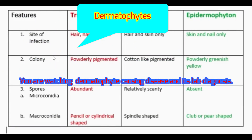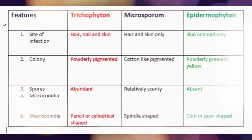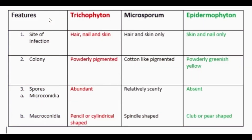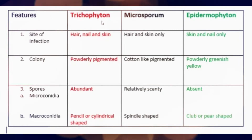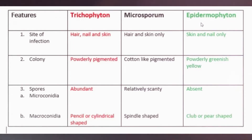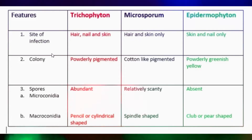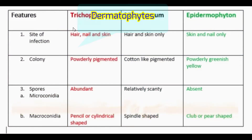Hello everybody. Today we are going to practically identify dermatophytes. As you know, dermatophytes are of common level, consisting of three types of fungus genus: Trichophyton, Microsporum, and Epidermophyton, that commonly cause skin, hair, and nail disease. Identification is based on the following features: site of infection, colonial morphology, and presence of spores like microconidia and macroconidia.